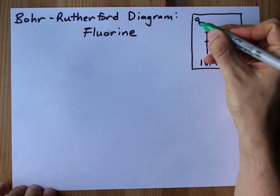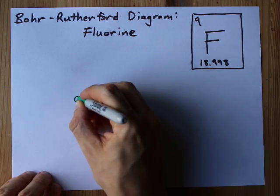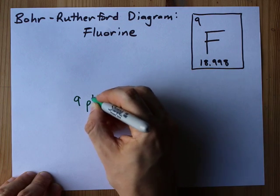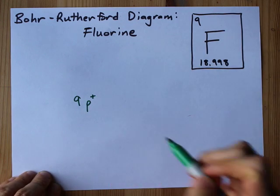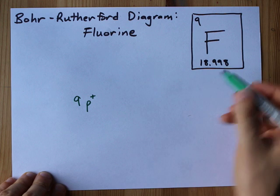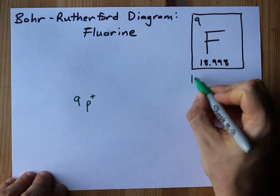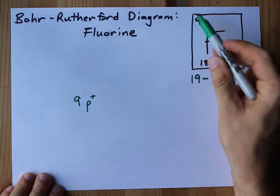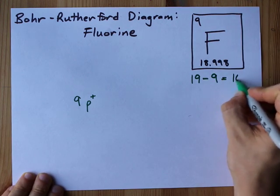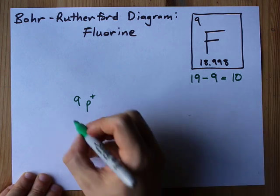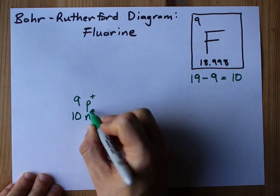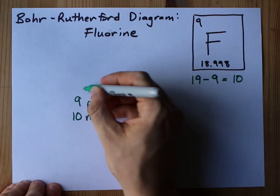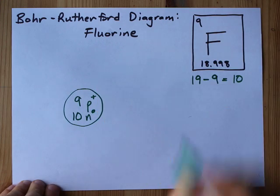The atomic number 9 is the same as the number of protons, so give yourself 9 protons in the center of your atom. And the number of neutrons is the same as the mass number minus the atomic number. 19 minus 9 leaves us with 10 neutrons. I'm gonna write my 10 neutrons here in the center because protons and neutrons are what you find in the nucleus of an atom.